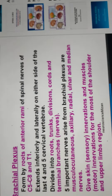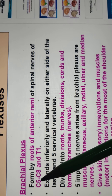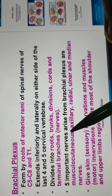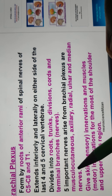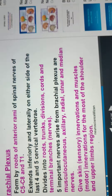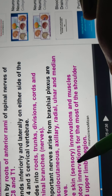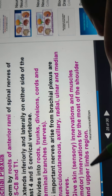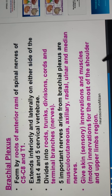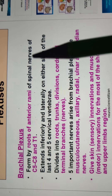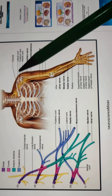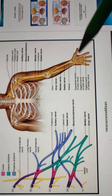The brachial plexus is formed by C5 to C8 and T1. It is divided into five important nerves: the musculocutaneous, axillary, radial, ulnar, and median nerves. These five nerves are important for the brachial plexus. They provide sensory and motor innervation to the skin and muscles of the shoulder and upper limbs region.